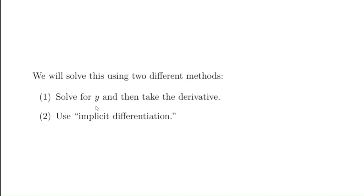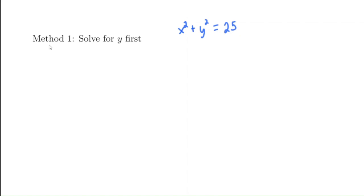We're going to solve this using two different methods. First, we'll take our original equation x² + y² = 25 and solve it for y, then take the derivative. The second method we'll use is called implicit differentiation.